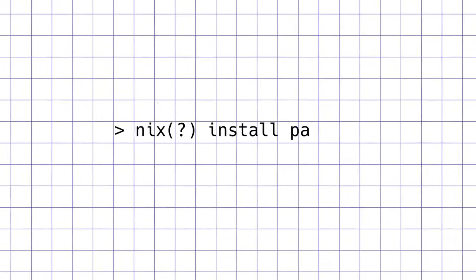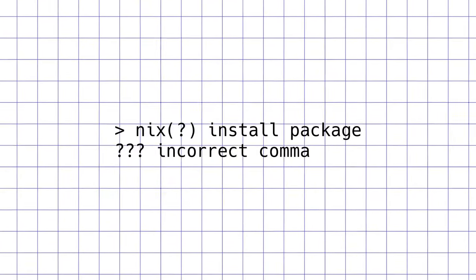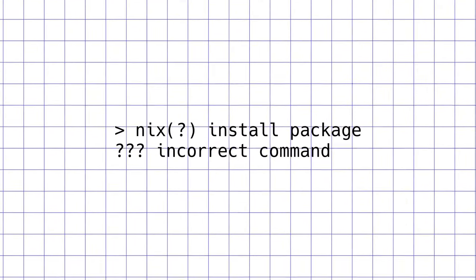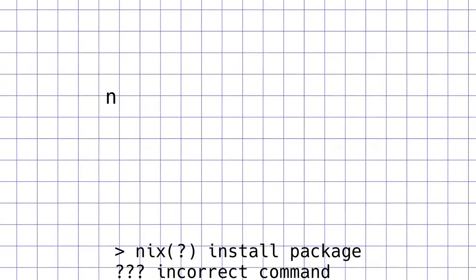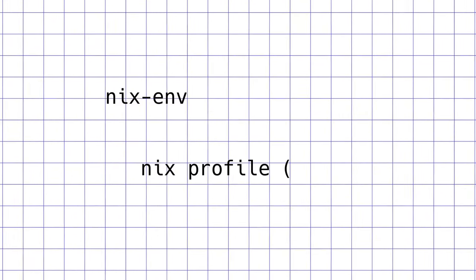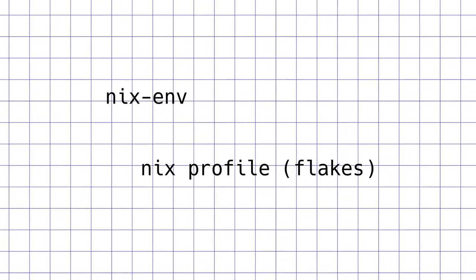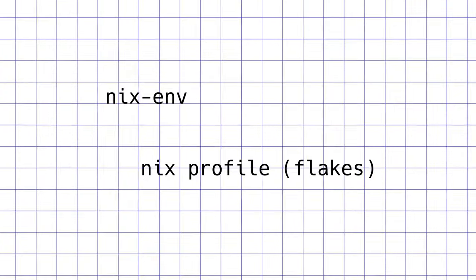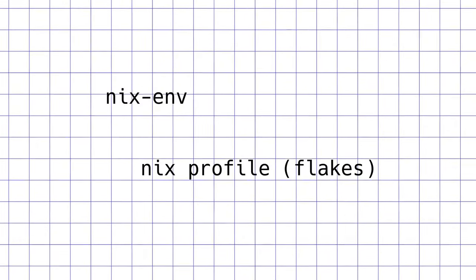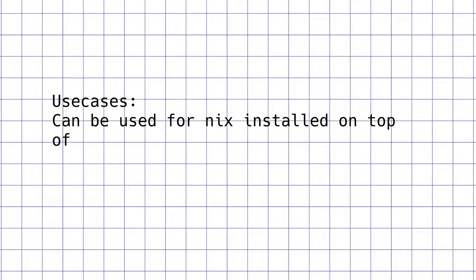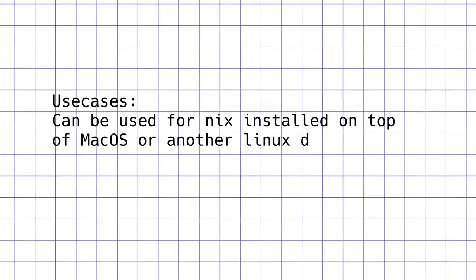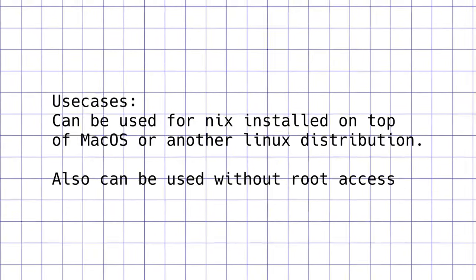One of the first things you would want to do as a Linux user is bring up your command line and type three letters — install and a package name. It is kind of possible in NixOS and pure Nix with the nix-env command, or with nix profile if you have flakes enabled. This is a viable way to install packages, but it is often referred to as the incorrect one since it does not use most of Nix's advantages. It is still a working way you can choose if you use Nix outside of NixOS or if you don't have root access.